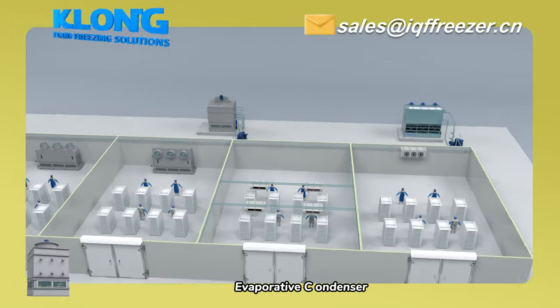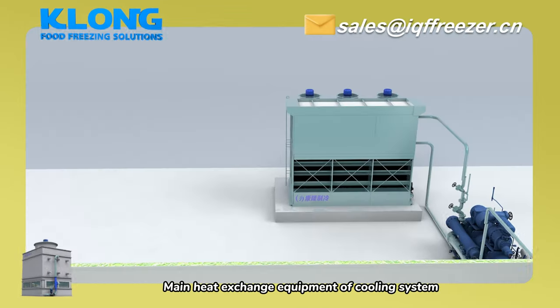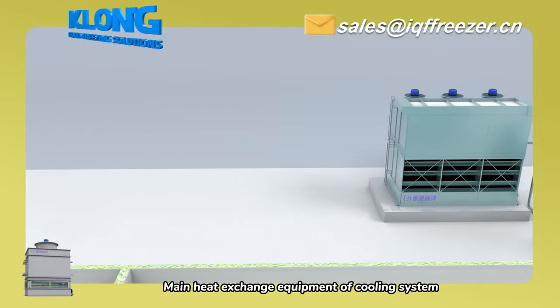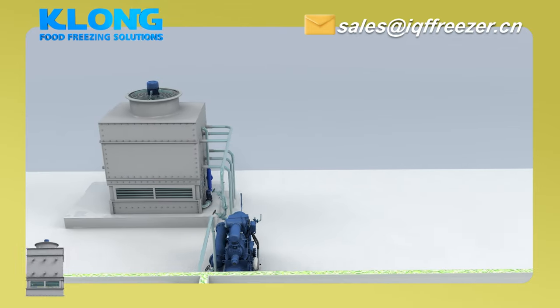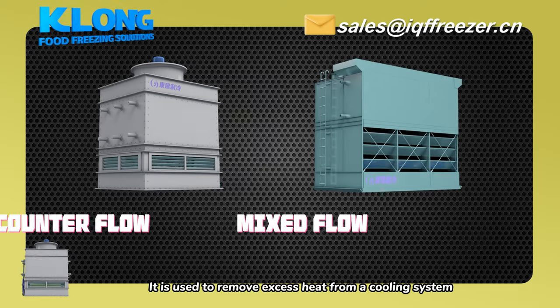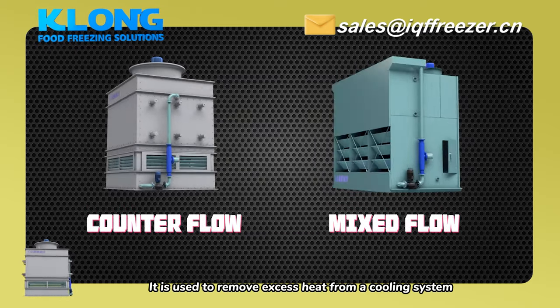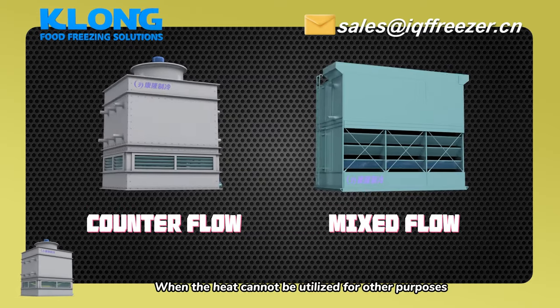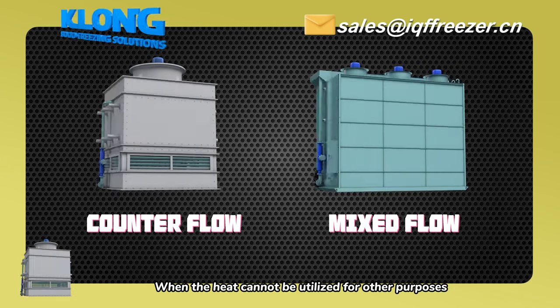Evaporative condenser — the main heat exchange equipment of a cooling system. It is used to remove excess heat from a cooling system when the heat cannot be utilized for other purposes.